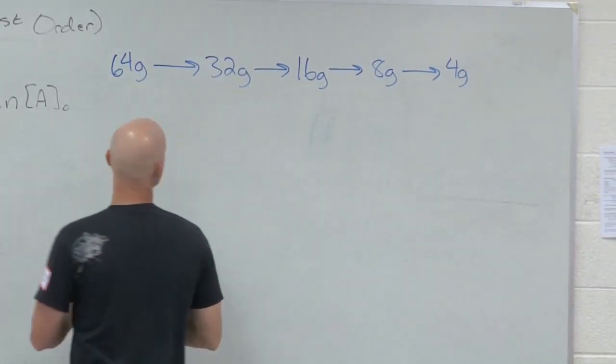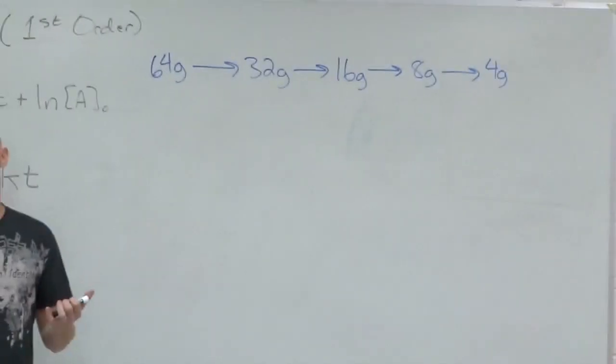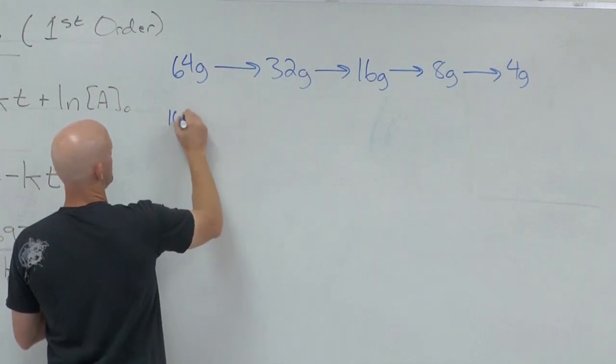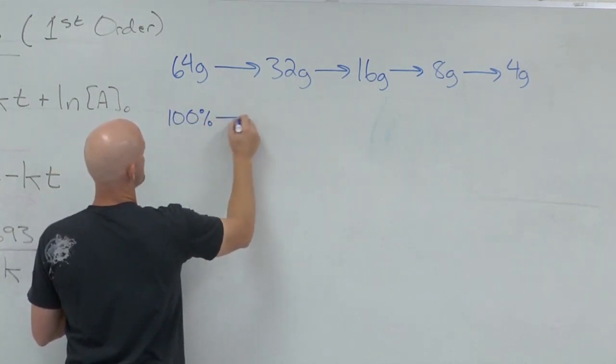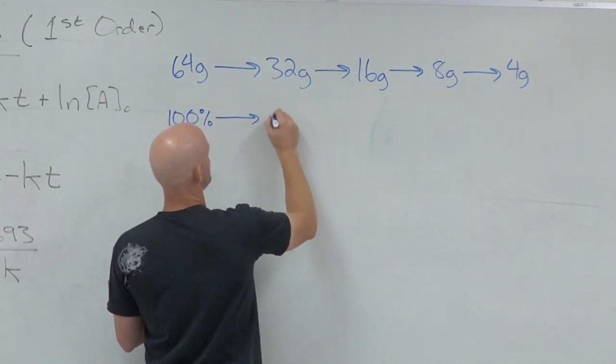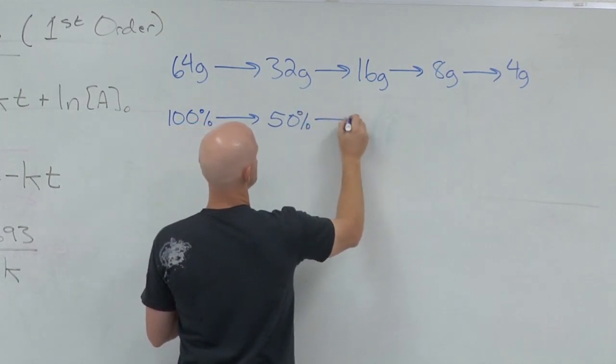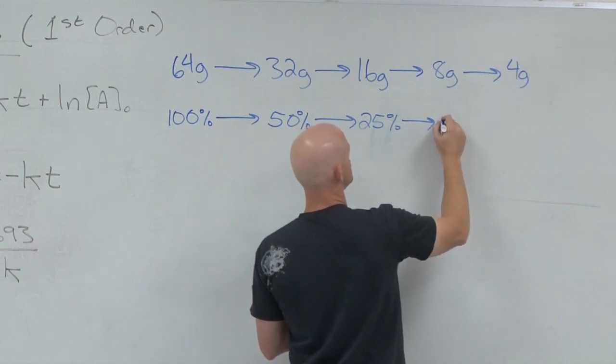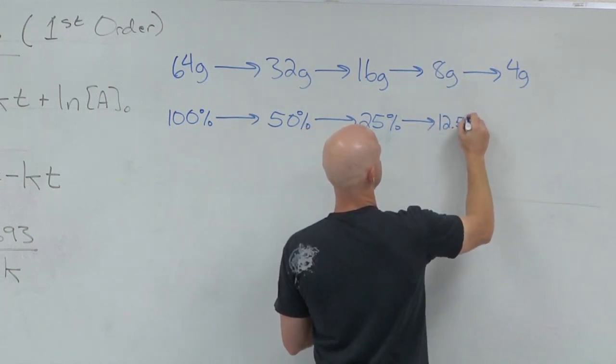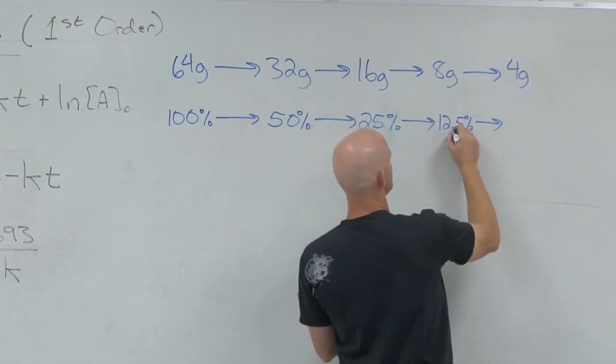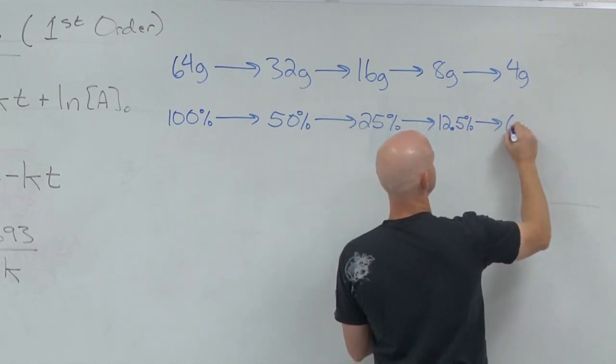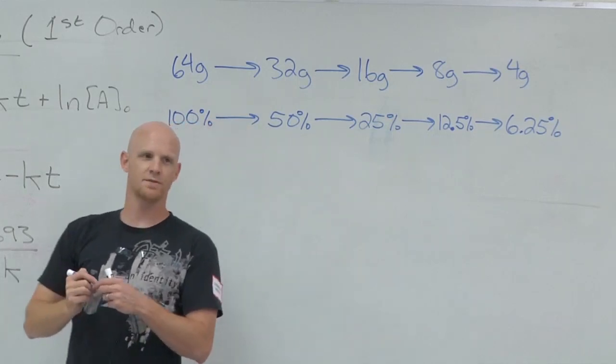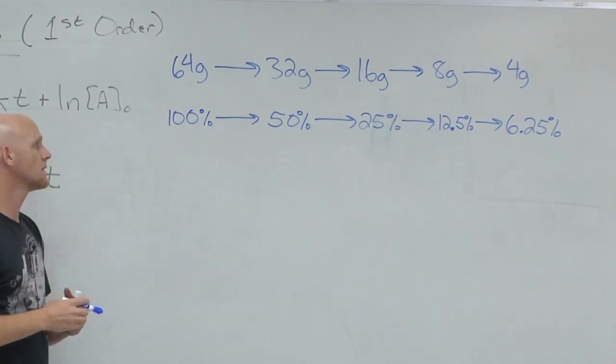You can also look at this not just in grams. You could look at these in percentages. What percent of your sample do you originally start with? All of it, so 100%. What percent would be left after one half-life? 50%. Second half-life. 25%. Third half-life. 12.5%. And so on, just keep dividing by two.